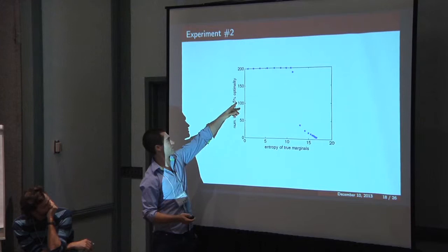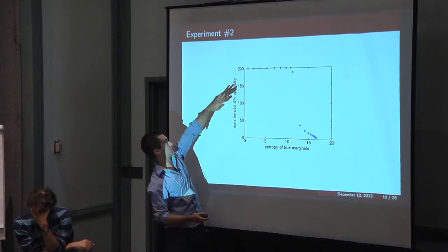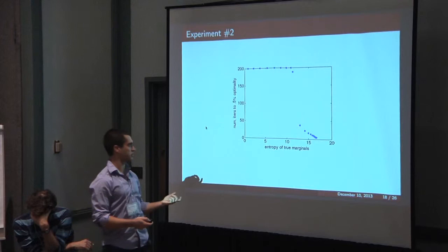I plot the amount of work necessary to get within half of a percent of optimality gap. I truncated at 200 iterations, but this goes up higher. What you see is that there's this transition where suddenly the algorithm starts converging much faster, and that's for high entropy marginals.